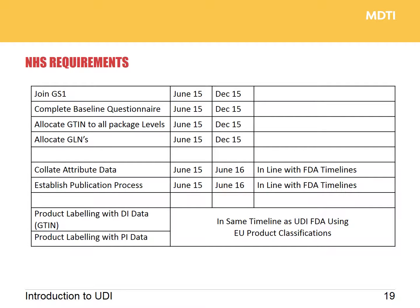The Department of Health is expecting all medical device manufacturers to join GS1, complete a baseline questionnaire, allocate GTINs and GLNs, start collecting the dataset, and establish internal publication processes in line with FDA timelines. From the labeling point of view, in the same timeline as the FDA timelines, using EU product classifications instead of US classifications.